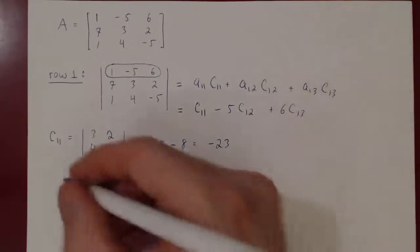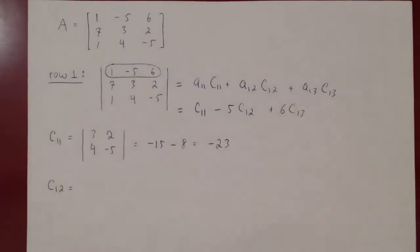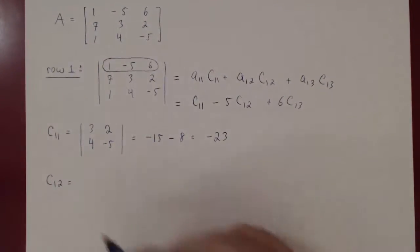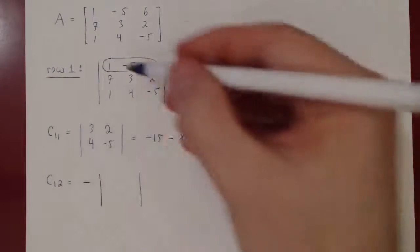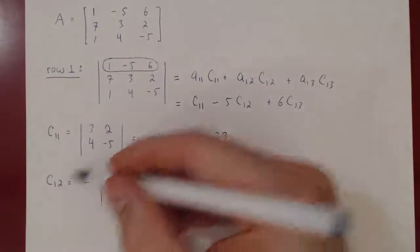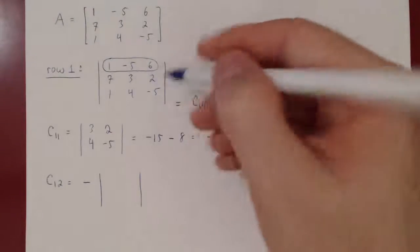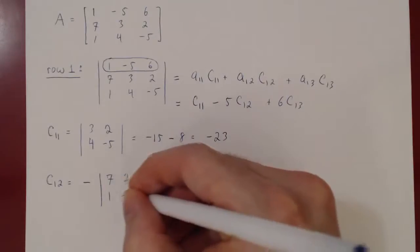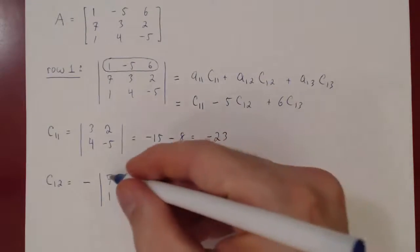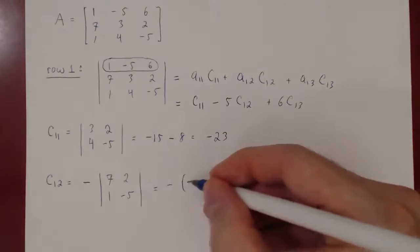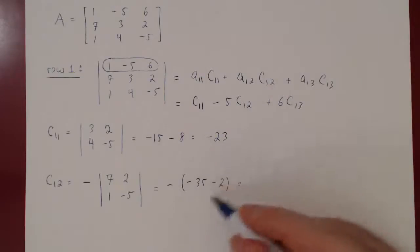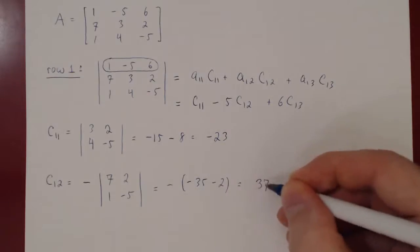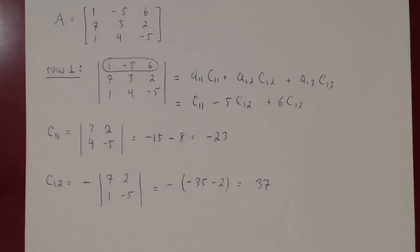C12: negative 1 to the power 1 plus 2 is -1 cubed, which is negative 1. Deleting row 1 and column 2 leaves (7, 2; 1, -5). The determinant is 7 times -5 minus 1 times 2: -35 minus 2 equals -37. Then C12 = negative 1 times -37 equals positive 37.